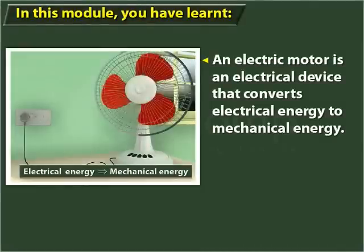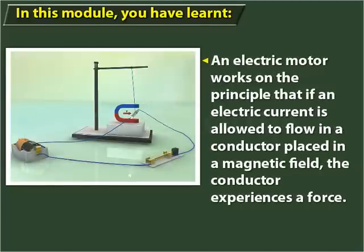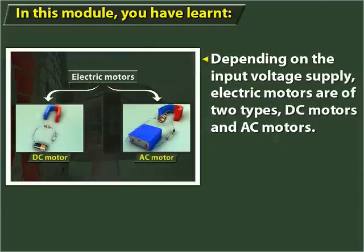An electric motor is an electrical device that converts electrical energy to mechanical energy. An electric motor works on the principle that if an electric current is allowed to flow in a conductor placed in a magnetic field, the conductor experiences a force. Depending on the input voltage supply, electric motors are of two types: DC motors and AC motors.